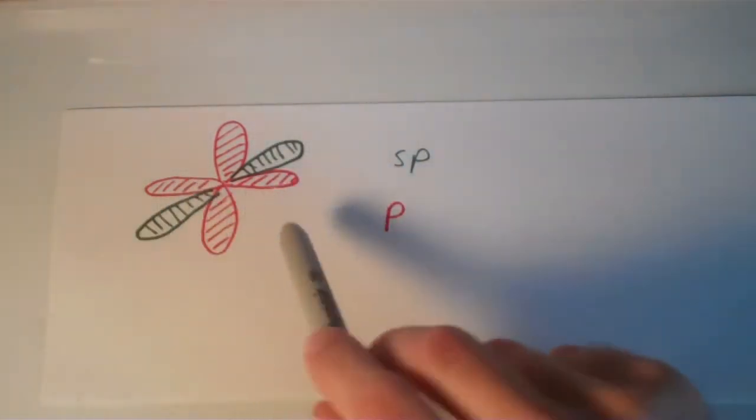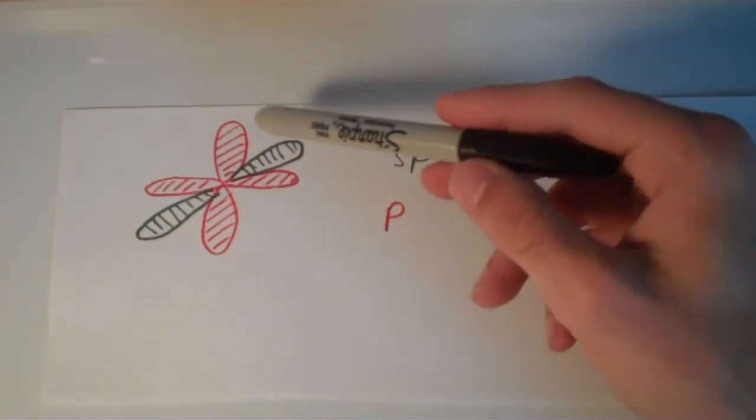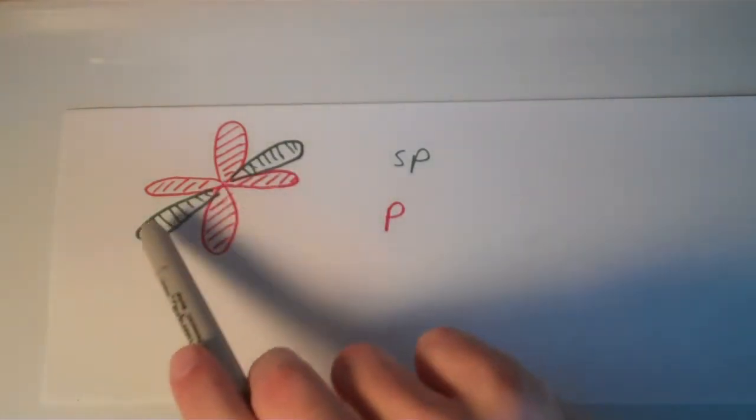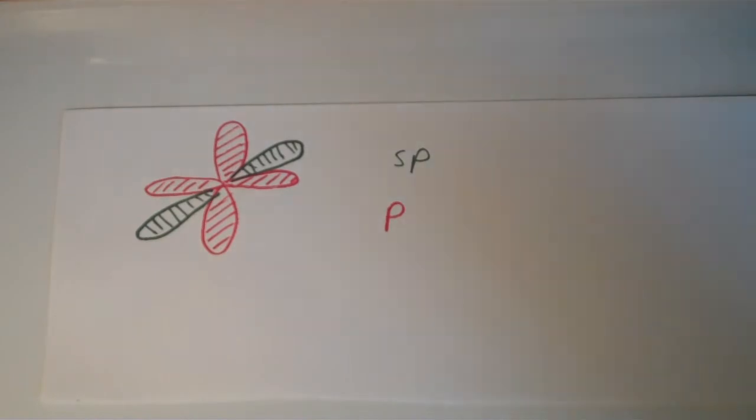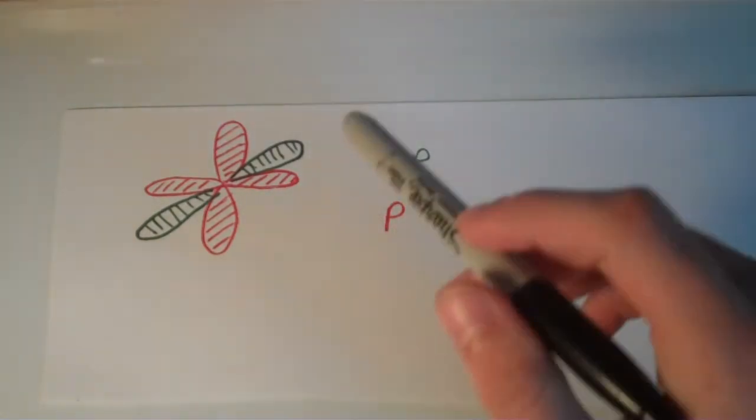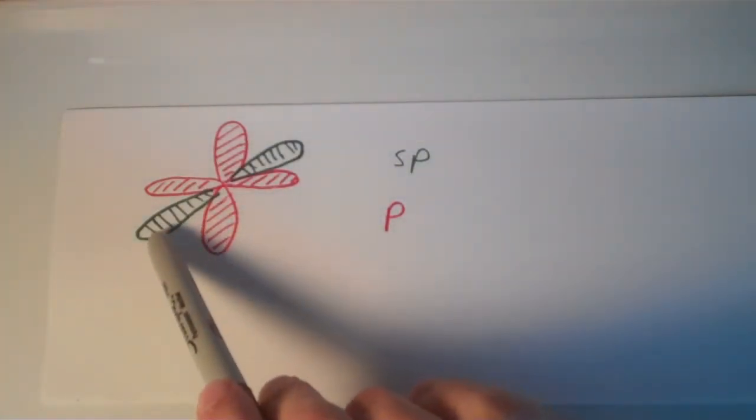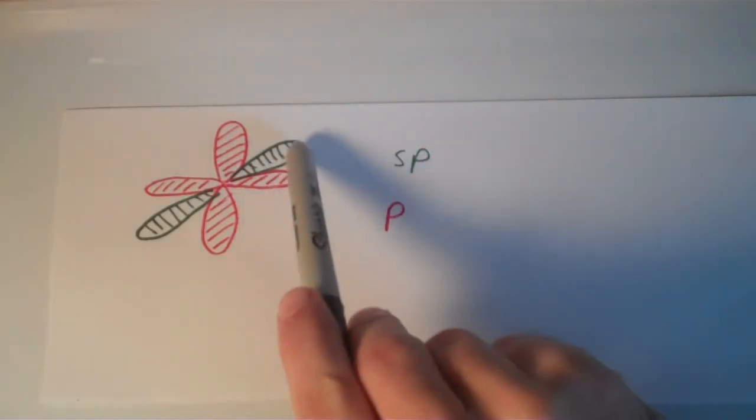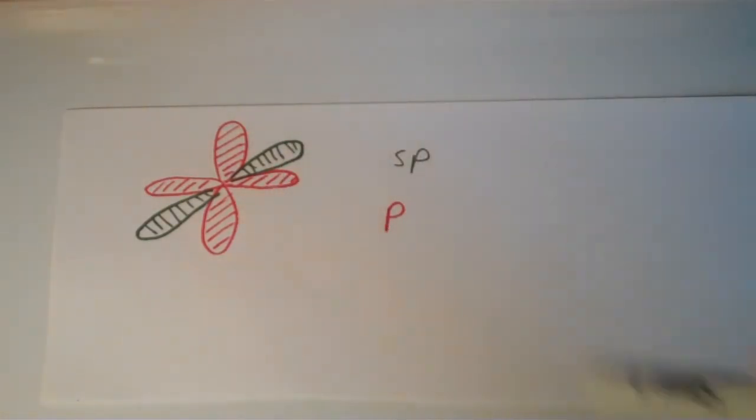The p orbitals, which are perpendicular with respect to one another—that'll always be true for any pure unhybridized p orbitals—those p orbitals are perpendicular to one another, and the plane that those p orbitals form is perpendicular to the line formed by the sp orbitals. So the sp orbitals sort of cut through the plane formed by these p orbitals. The way I've tried to draw it, this lobe here, this sp orbital here, is coming in front towards you, and this sp orbital is going back into the page.